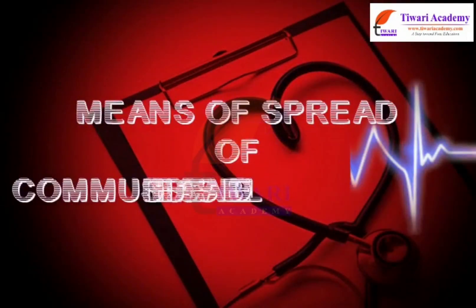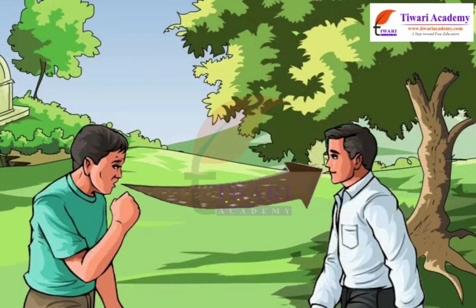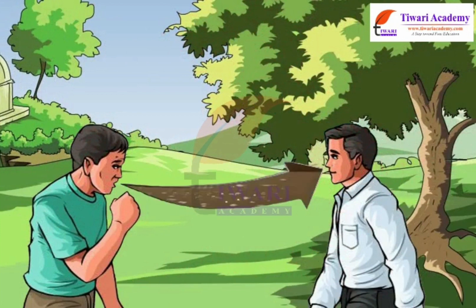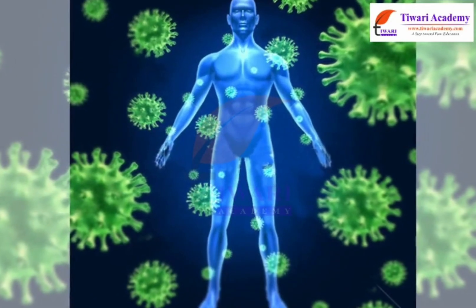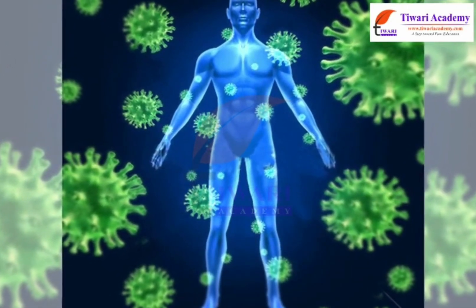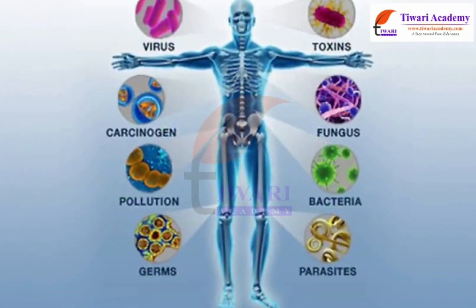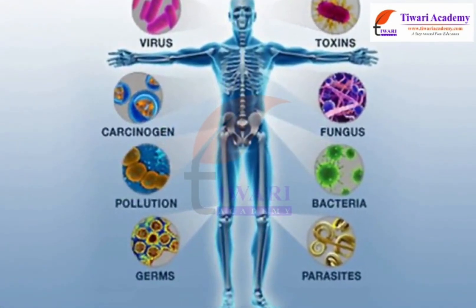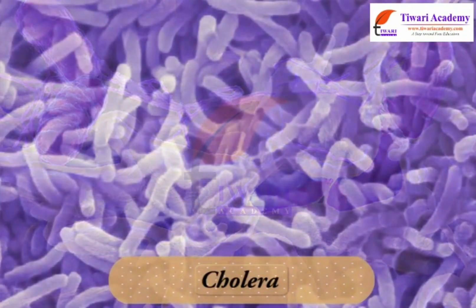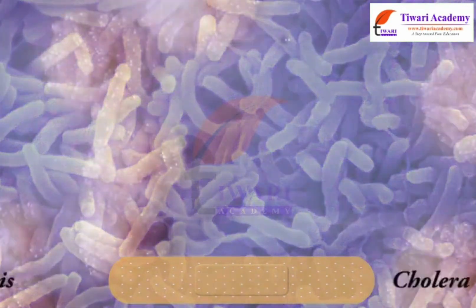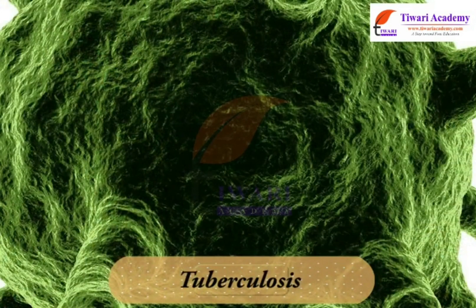Communicable diseases can be transmitted from an infected person to a healthy person. They are caused by infective agents — pathogens that invade the human body or release toxins to cause damage to normal body cells and their functions. Examples include typhoid, cholera, tuberculosis, AIDS, etc.